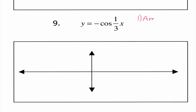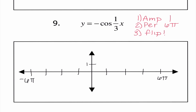Number 9: the amplitude is 1 (absolute value of -1), the period is 2 pi divided by 1/3, which gives 6 pi, and this time we have a flip because the A value is negative. I label the axes accordingly. Since cosine is flipped, I start at the negative amplitude, then 0, amplitude, 0, negative amplitude. Working backwards, I continue that same pattern. When we have a reflection, we do the complete opposite of the normal graph — for sine that normally starts at 0, with a reflection we still start at 0 but go down instead of up.